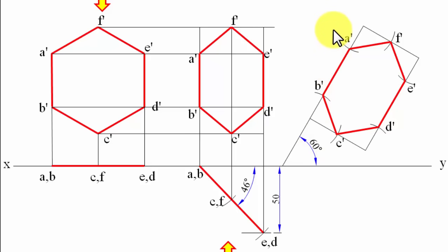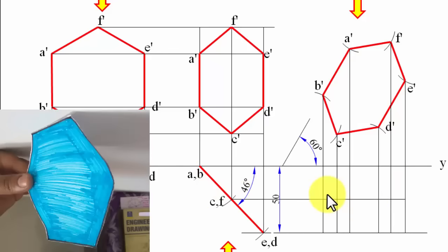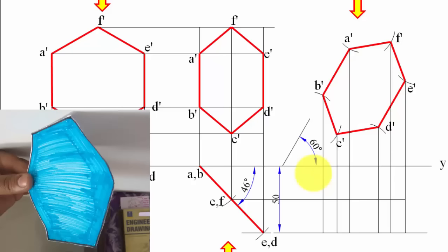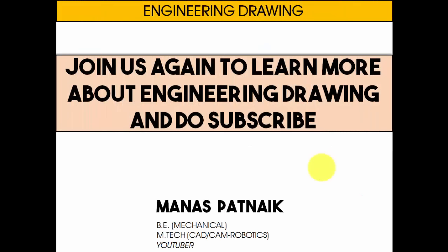Now draw projector lines from top to bottom and from left to right. For example, the vertical of B and the horizontal of B give the intersection point for B in the top view. Working out all the points and joining them in sequence gives the final top view.